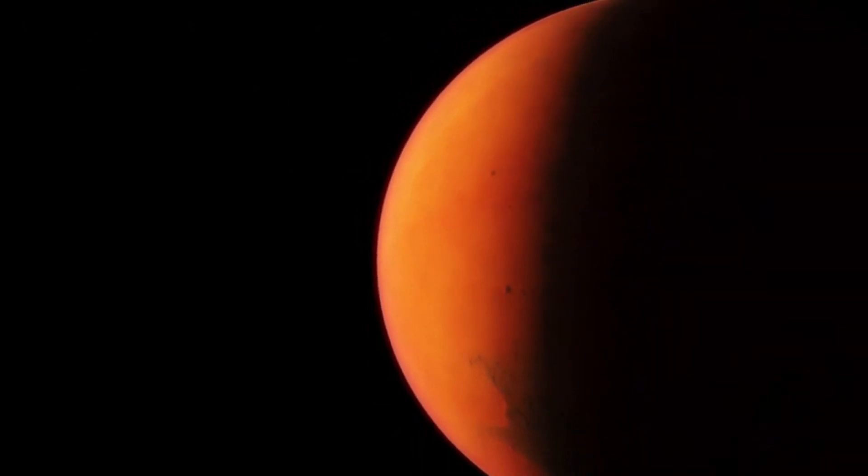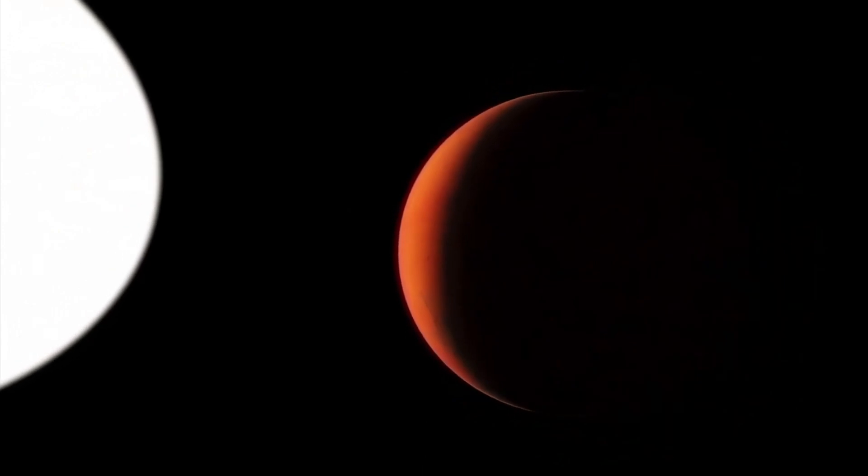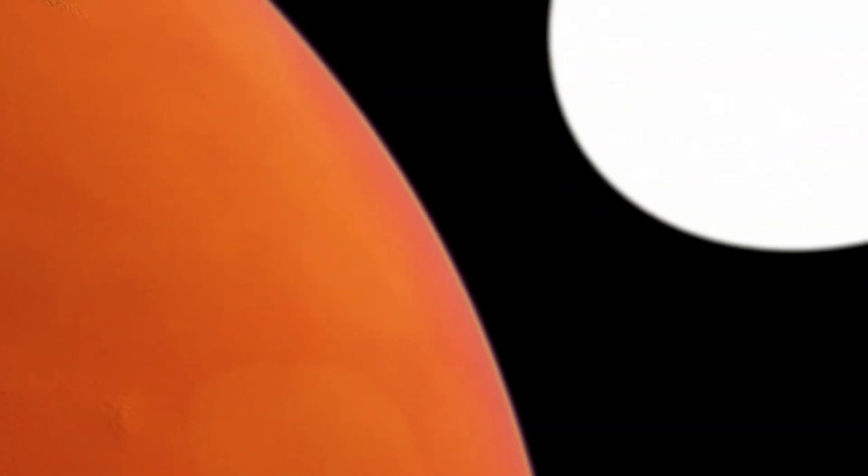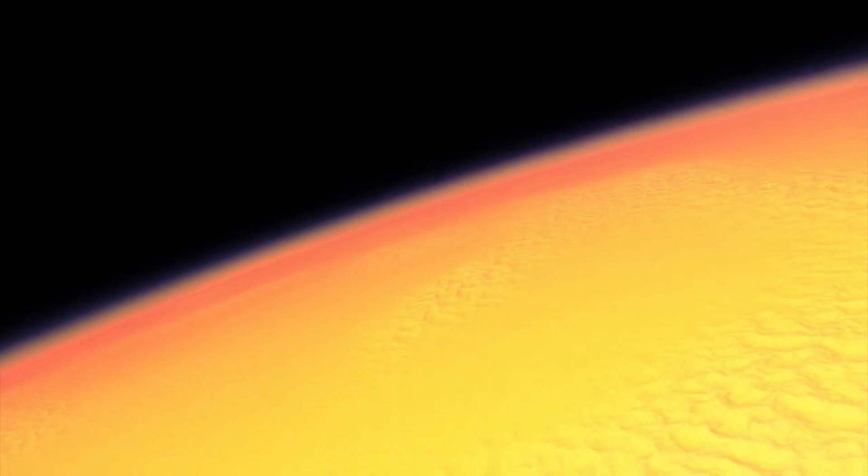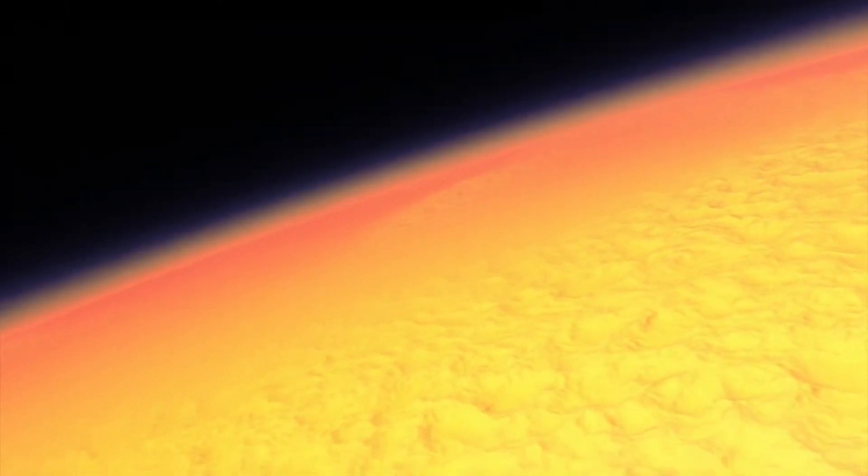Janssen is tidally locked, just like Korat 7b. This means one side of the planet always faces the sun, and the other side is always in darkness. Because it's so close to its star, the water on this planet is not in a liquid state. Instead, it's in a supercritical state, a strange state somewhere between a liquid and a gas.